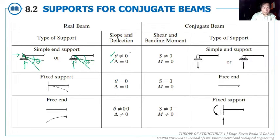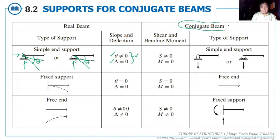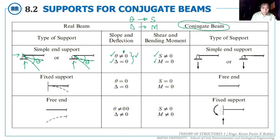Since the slope of the real beam corresponds to the shear on the conjugate beam, and since the slope is not zero, the corresponding shear will also not be zero. Since the deflection is zero, it corresponds that the moment on the conjugate beam would be zero. So we need a joint type where shear is non-zero but moment is zero.